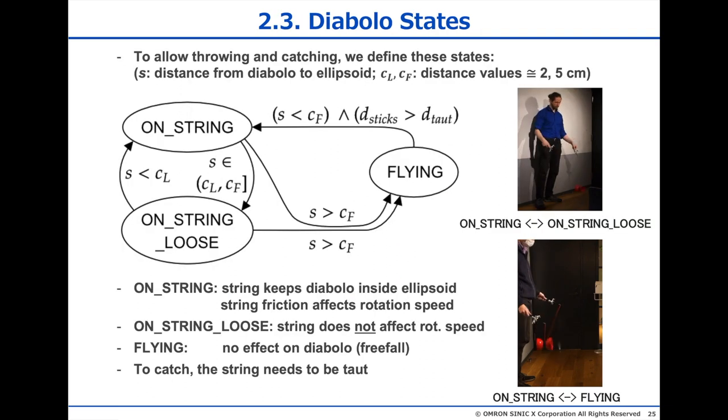On string, loose, and flying. When the Diabolo is on the string, the string transmits friction forces. When it is loose, the string does not transmit any force, but the Diabolo will fall back on the string, because it's close and the string is still between the two orbitals. When the Diabolo is flying, it does not fall back onto the string automatically. The string needs to be taut and near the Diabolo, otherwise it falls to the ground. This summarizes the Diabolo model.